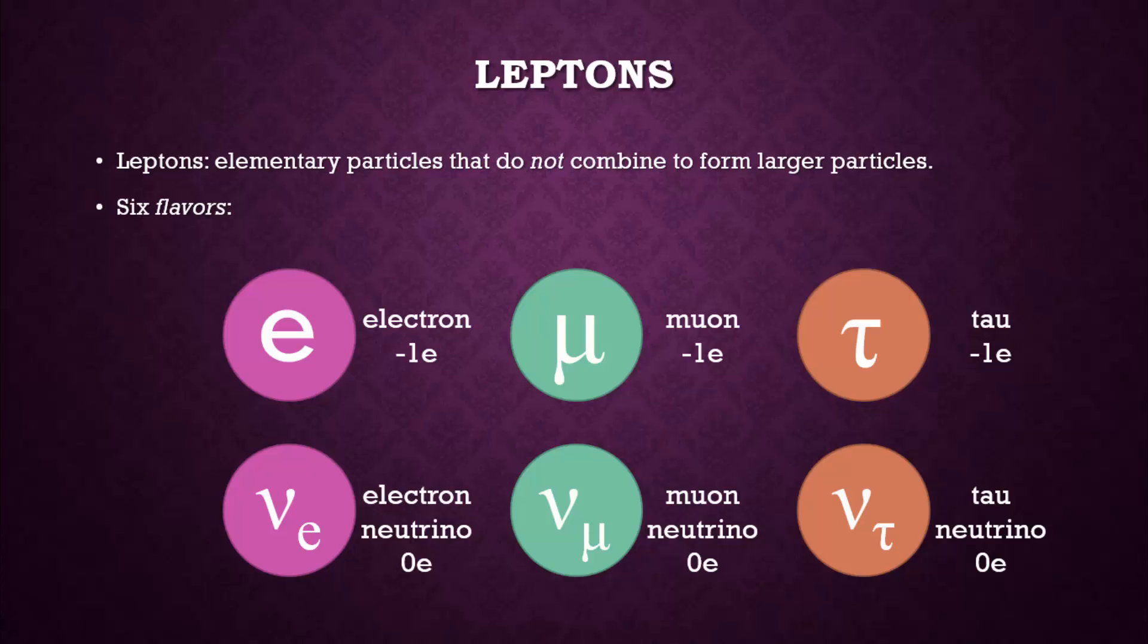You can see that the electron, the muon, and the tau all have a charge of negative one elementary charge. And that all the varieties of the neutrino are neutral.